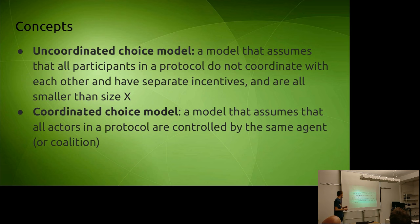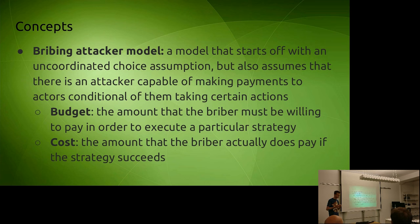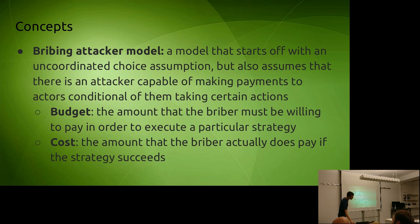The coordinated choice model assumes that all actions in a protocol are controlled by the same agent or coalition. The bribing attacker model has an uncoordinated choice assumption but also assumes there is some attacker capable of making payments to actors conditional on those actors taking certain actions. The bribing attacker model has two parameters: budget — how much the attacker is willing to pay to carry out an attack — and cost — if the attacker does carry out the attack and it succeeds, how much they actually end up paying.